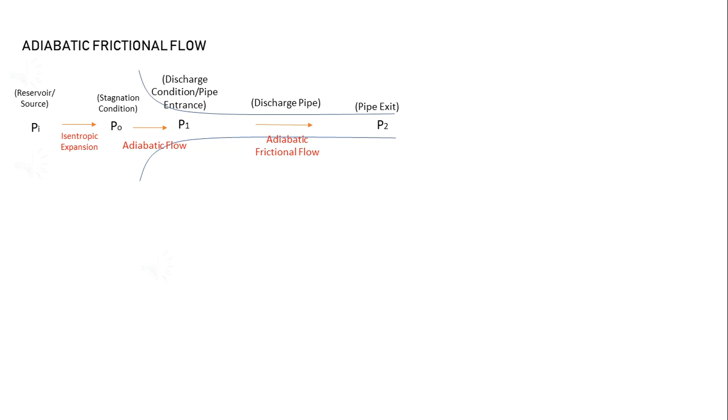The conditions of the gas in each section is defined by pressure, temperature, velocity of the gas, and Mach number, others are density and mass velocity.